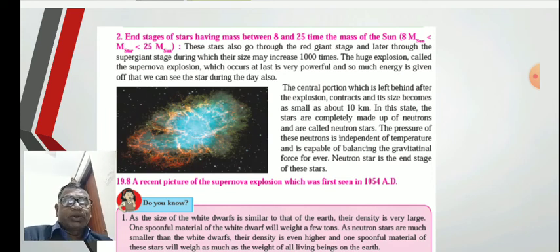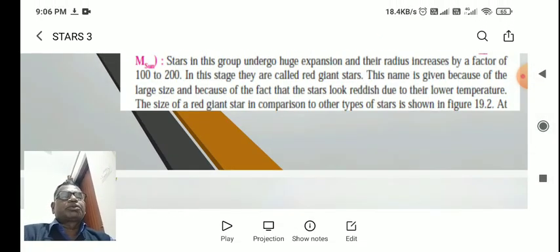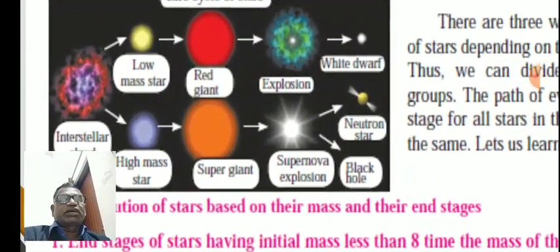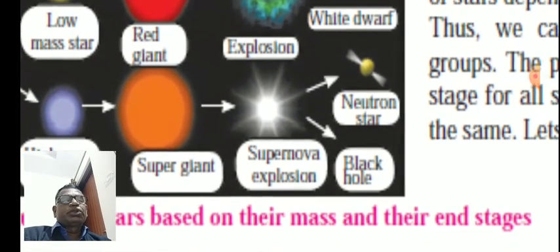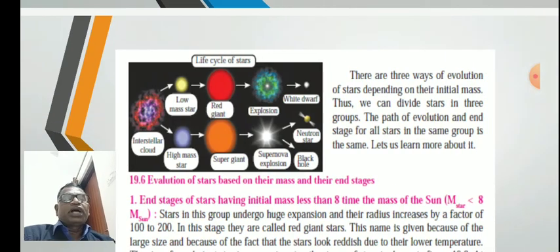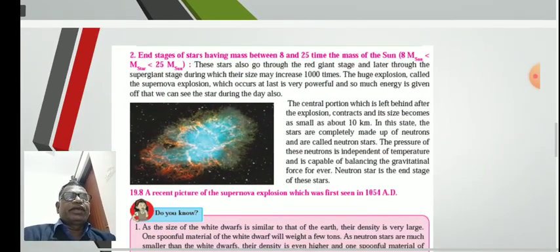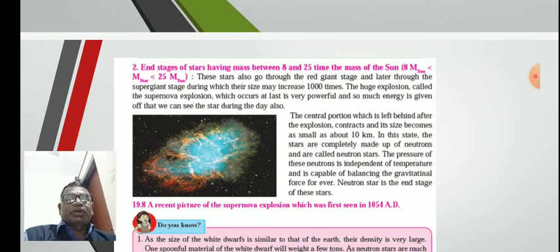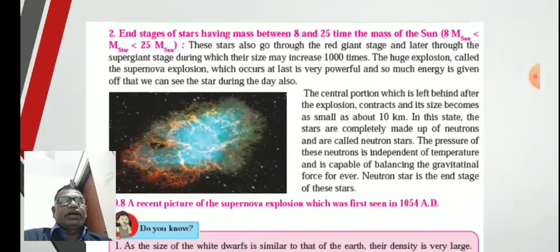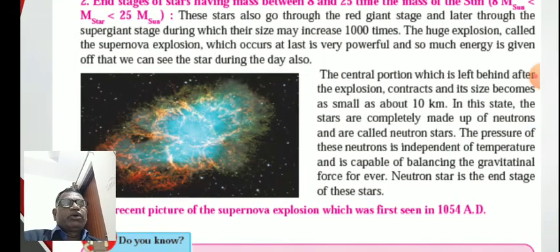The huge explosion is called the supernova explosion, which creates interstellar clouds from high mass stars, leading to neutron stars and black holes. The supernova explosion is very powerful and so much energy is given off that we can see the star during the day also. A recent picture of the supernova explosion which was first seen in 1054 AD.